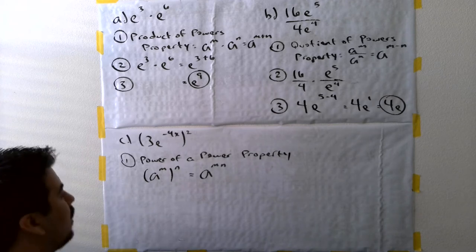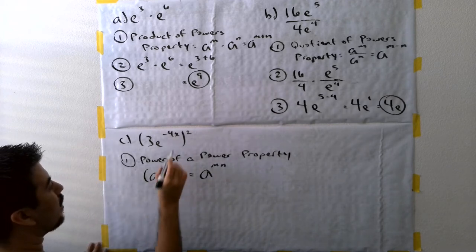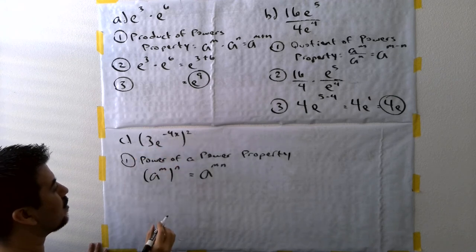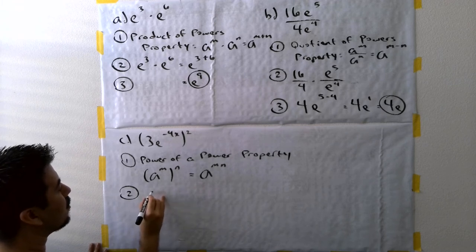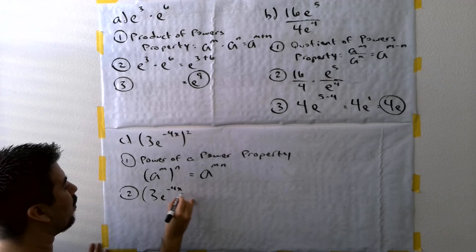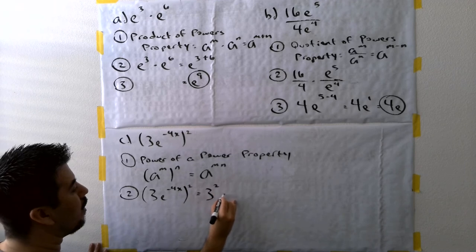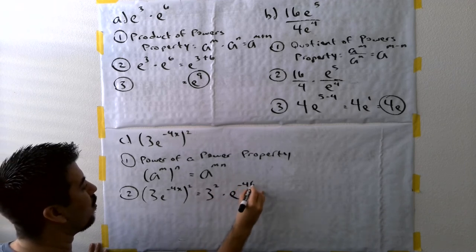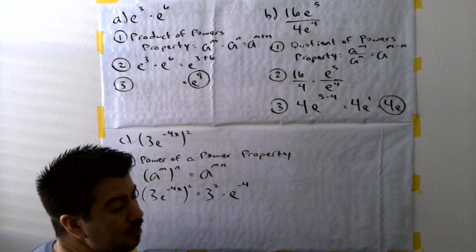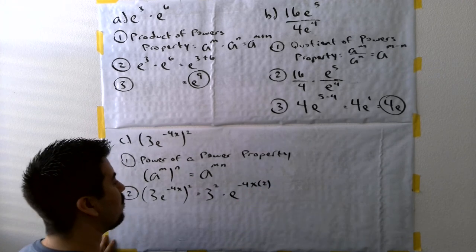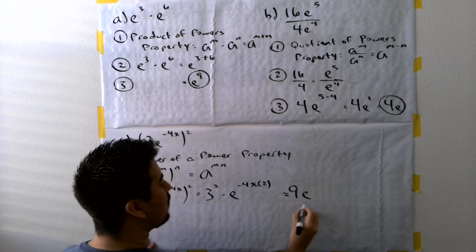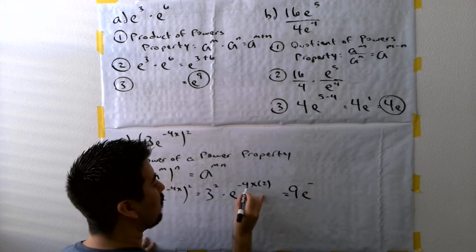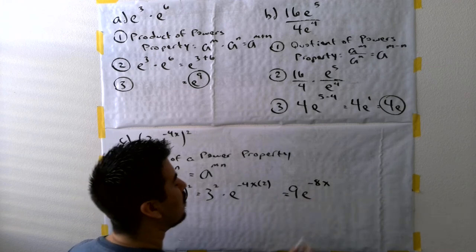In this case, the power of a power property applies not only to e to the negative 4x, but also to the 3. So applying it: 3e to the negative 4x, all squared, equals 3 squared times e to the negative 4x times 2. That gives 9 times e to the negative 8x, since 3 squared is 9 and negative 4 times 2 is negative 8, with the x remaining.